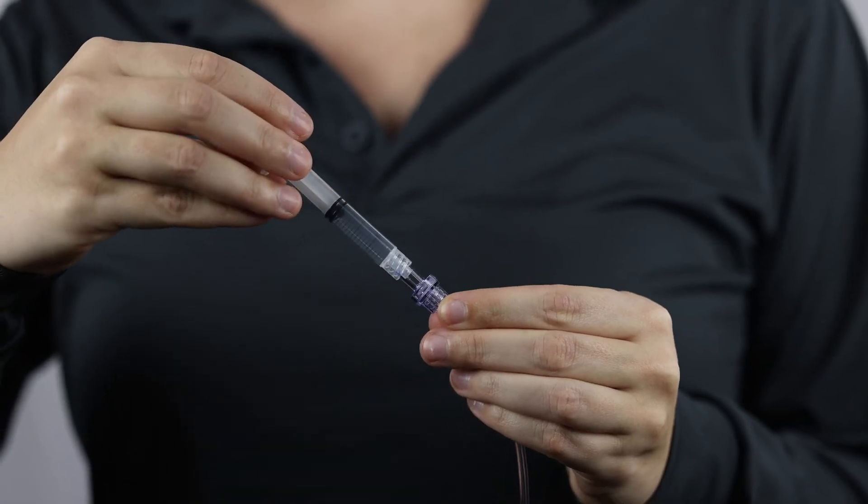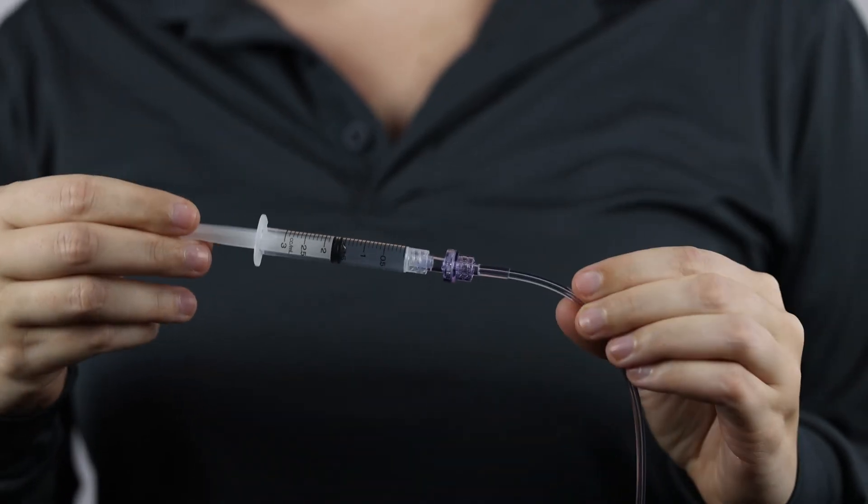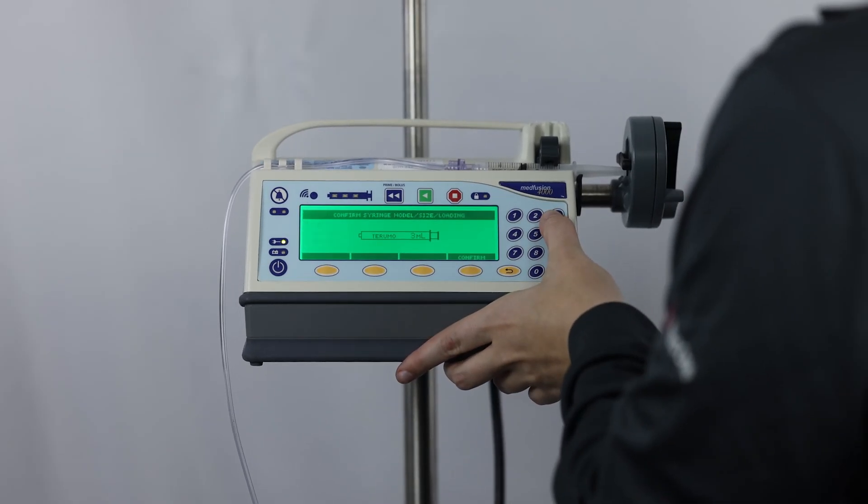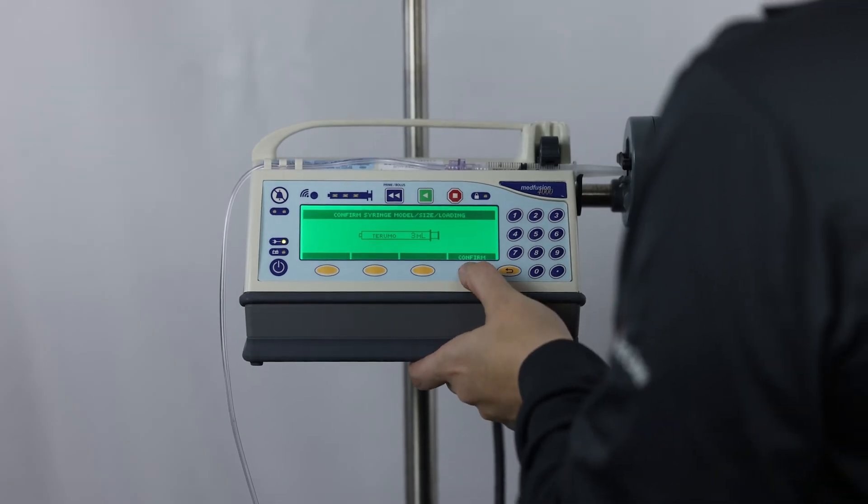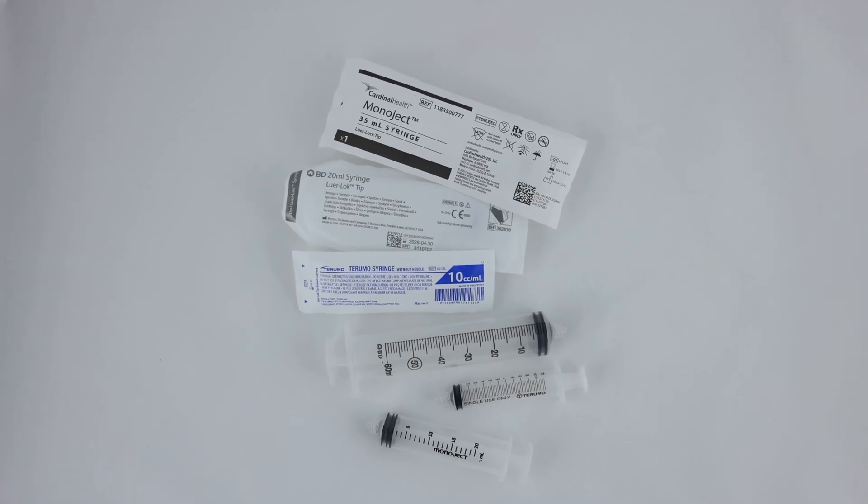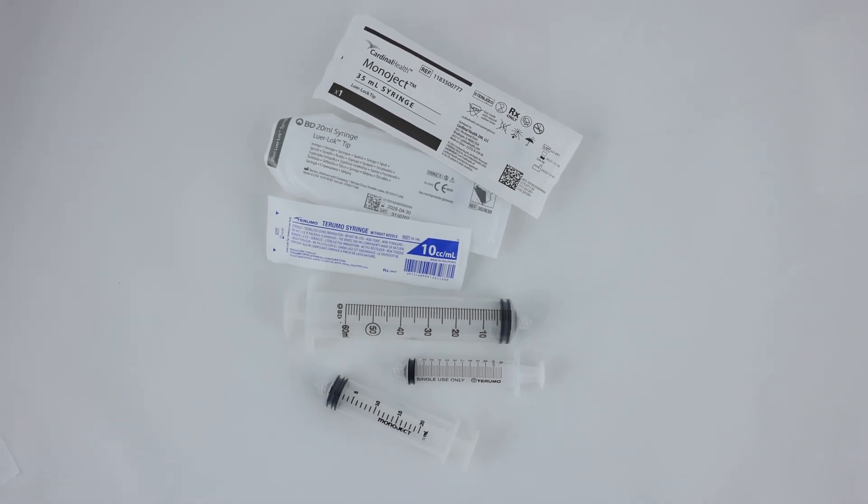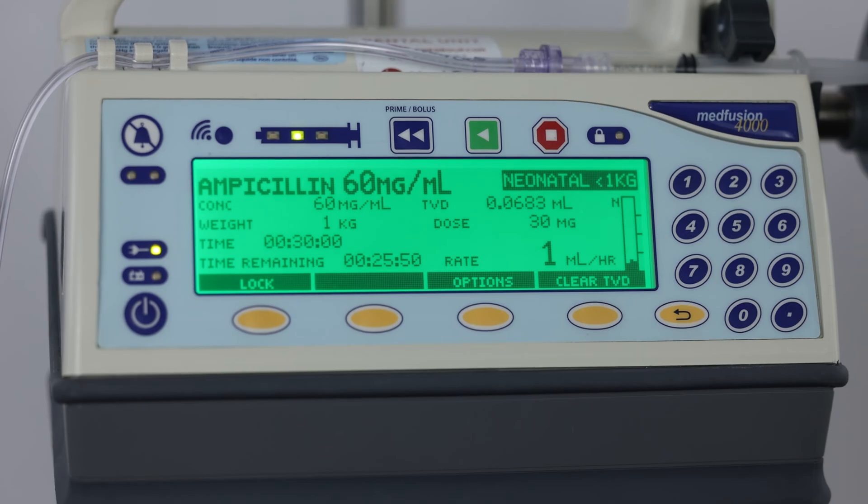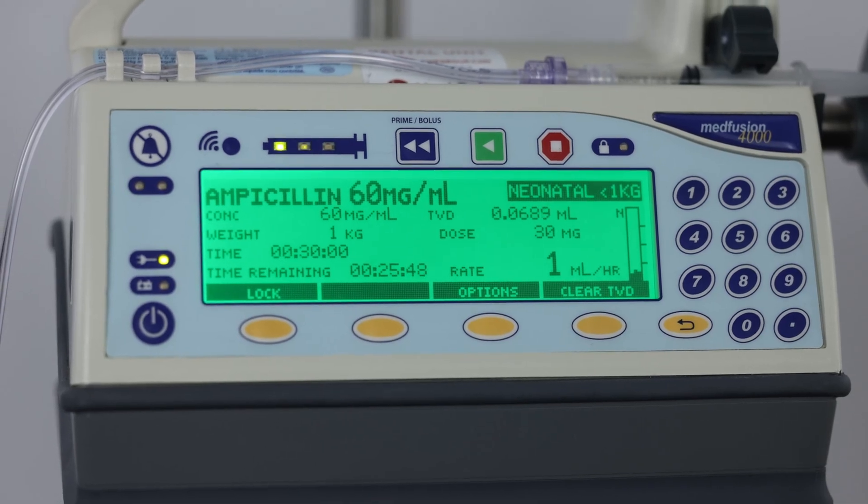Syringes compatible with the Medfusion syringe pump will have a luer lock connector, and the pump will auto-detect various types and sizes, ranging from 1 milliliter to 60 milliliters. Acceptable manufacturers include BD, Monoject, Terumo, and B. Braun. The flow rate range for the Medfusion 4000 is 0.01 to 1130 milliliters per hour.